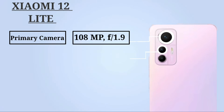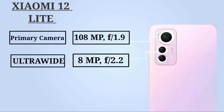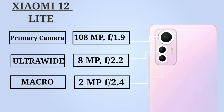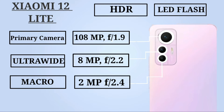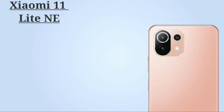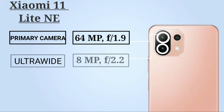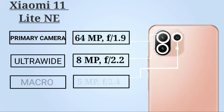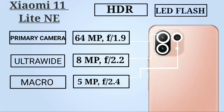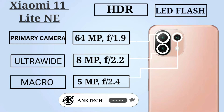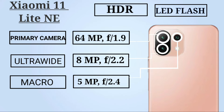Let's talk about cameras. Xiaomi 12 Lite has a primary camera of 108MP aperture f/1.9, 8MP ultrawide aperture f/2.2, and a macro camera of 2MP aperture f/2.4, with HDR and LED flash. Xiaomi 11 Lite has a triple camera setup: primary 64MP aperture f/1.9, ultrawide 8MP aperture f/2.2, and macro camera of 5MP aperture f/2.4, with HDR and LED flash.